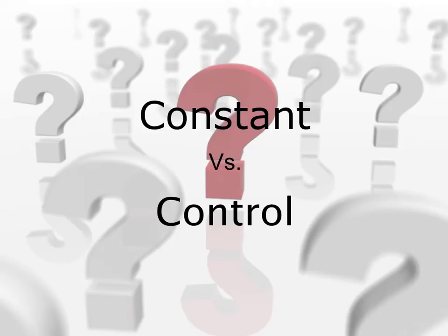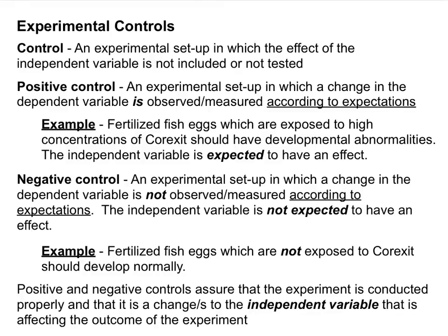So what is the difference between a constant and a control? Remember, constants are conditions that are kept the same. Controls are not the same as constants. You've learned that controls are experimental setups in which the effect of the independent variable is not included or not tested. And while that's fine for an elementary school or middle school science experiment, we need to go a step further. For biologists, we're often going to encounter two different types of controls: positive controls and negative controls.